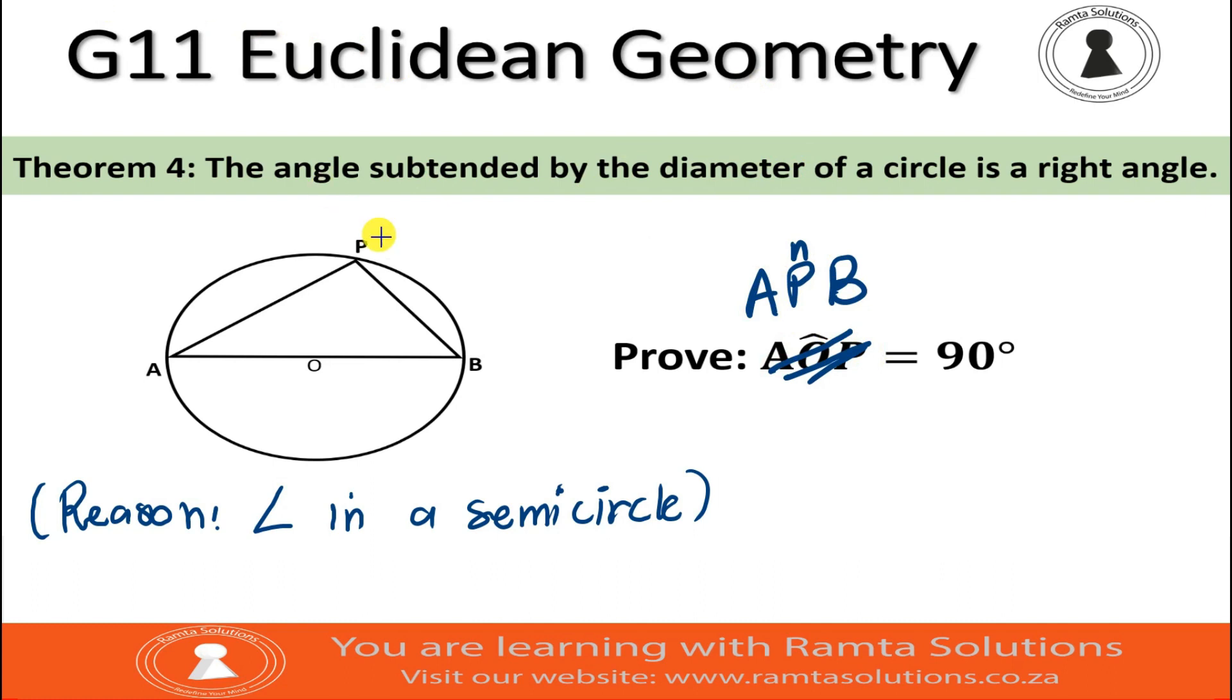So remember, this theorem says the angle subtended by the diameter of a circle is a right angle. You remember very well that a right angle is 90 degrees. So now, let's prove this theorem.